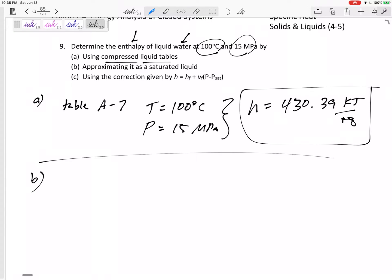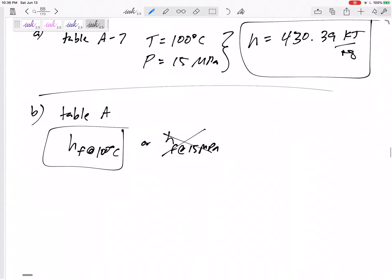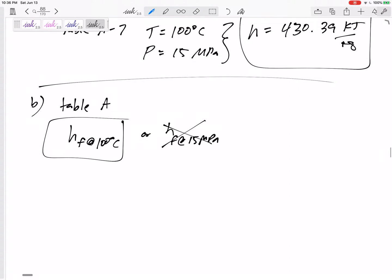What if we had approximated it as a saturated liquid? So if we went to table A, well, should we go to table A-4 or table A-5? We approximate it as a saturated liquid. Should we estimate it as HF at the temperature or HF at the pressure? No, at the temperature. Remember, if we didn't have compressed liquid property tables, we could estimate our values at the temperature. So I'd estimate it at 100 degrees C. So this would be table A-4, temperature of 100 degrees C.